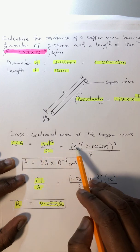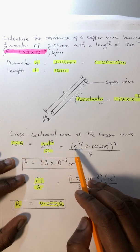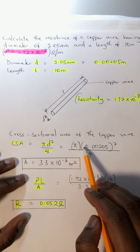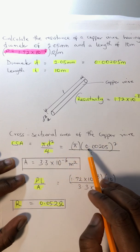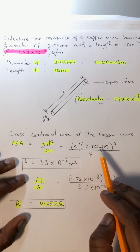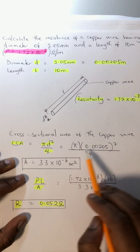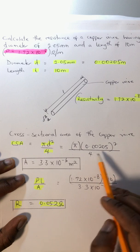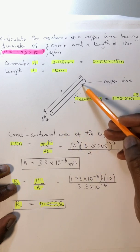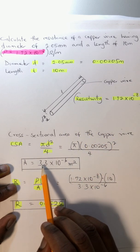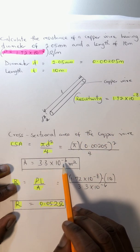Pi, which is 22/7, multiplied by the diameter squared, which equals 0.00205 squared, all over 4. The cross-sectional area of the copper conductor equals 3.3 × 10^-6 meters squared.